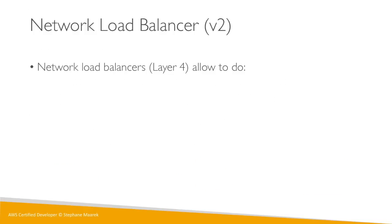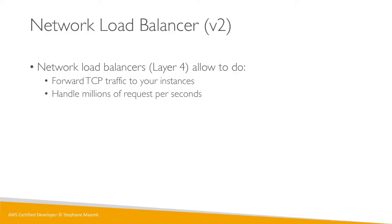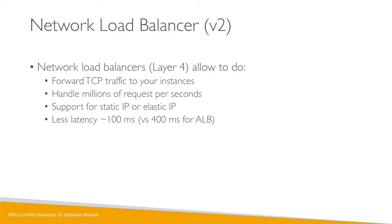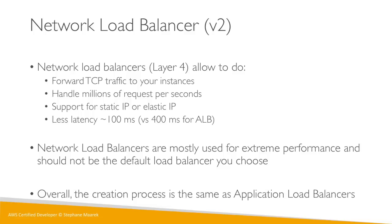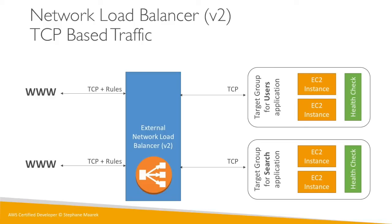Network Load Balancers operate at Layer 4 and handle TCP traffic — a lower level than the ALB's Layer 7 HTTP traffic. NLBs are designed for super high performance, handling millions of requests per second. They support static and elastic IPs and have less latency — around 100 milliseconds versus roughly 400 milliseconds for ALB. They are most commonly used for extreme performance scenarios and are not typically the default load balancer you'd choose. The process is the same as ALB but for TCP traffic routed to target groups.